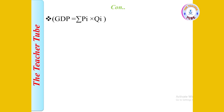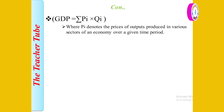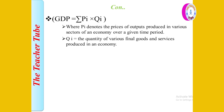Mathematically, GDP is equal to the summation of Pi times Qi, where Pi is the price of output produced in various sectors of the economy over a given period of time, and Qi is the quantity of various final goods and services produced in the economy.